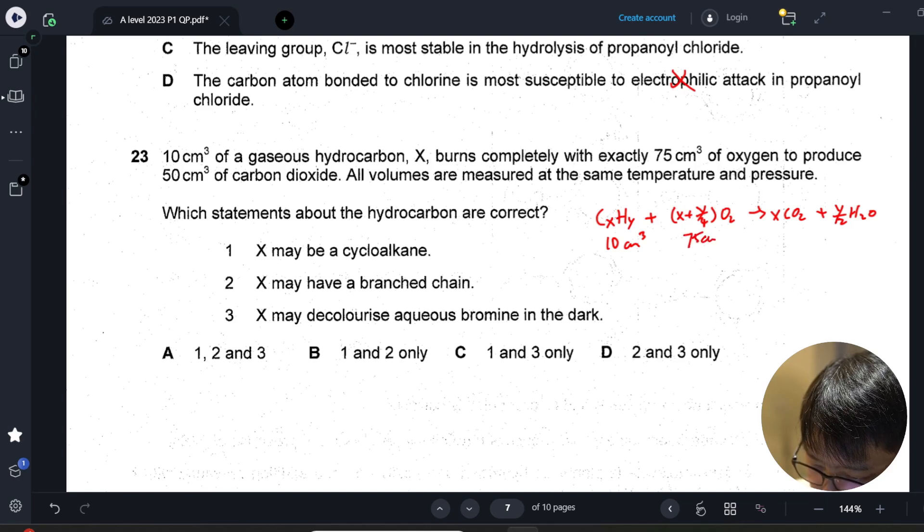It burns with 75 cm³, this is 50 cm³. Very quickly you can see that the ratio is 5 to 1, so x is 5.